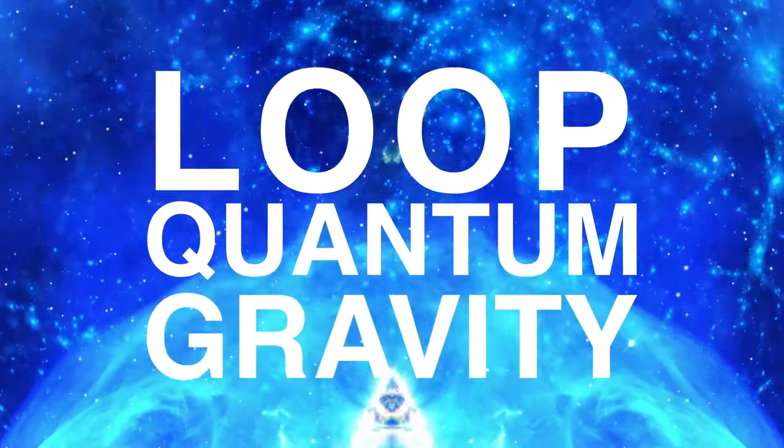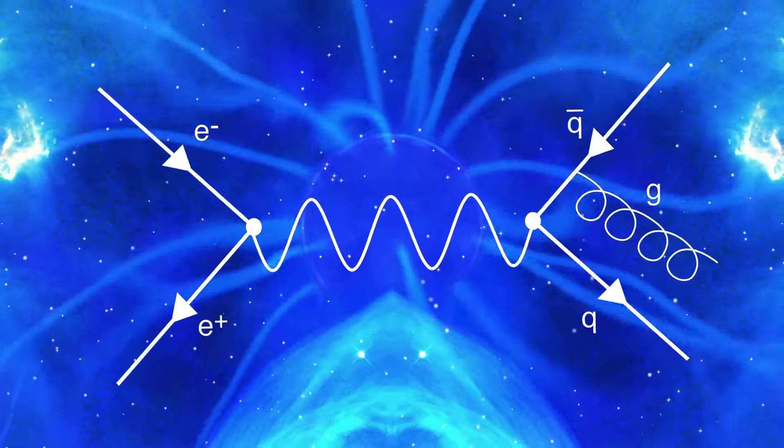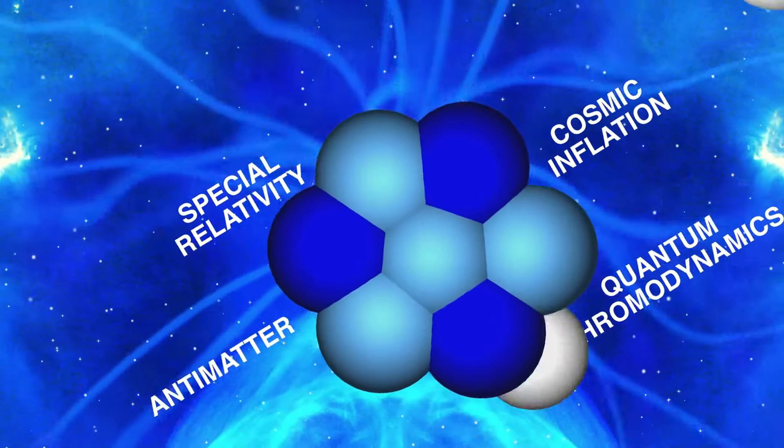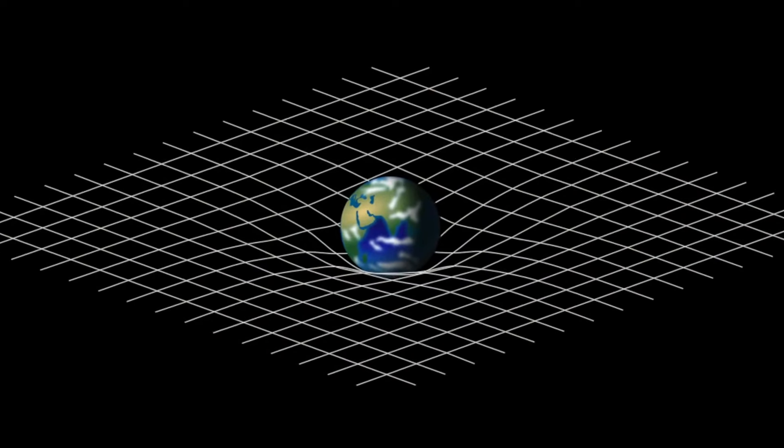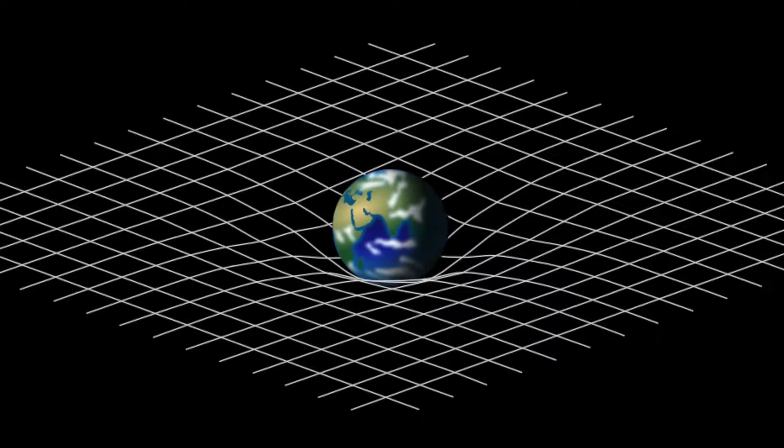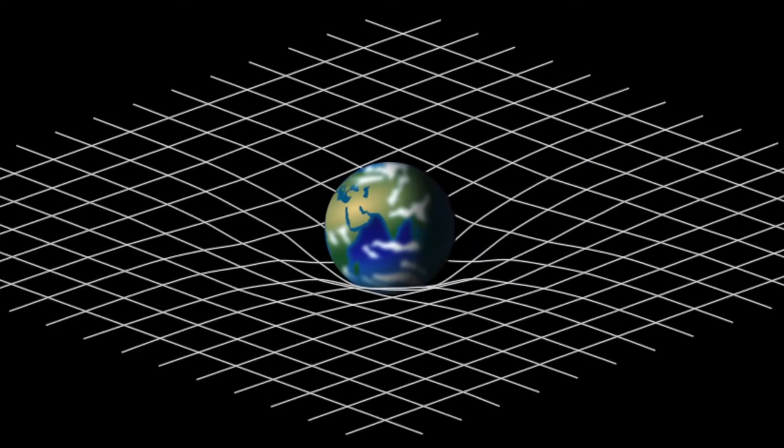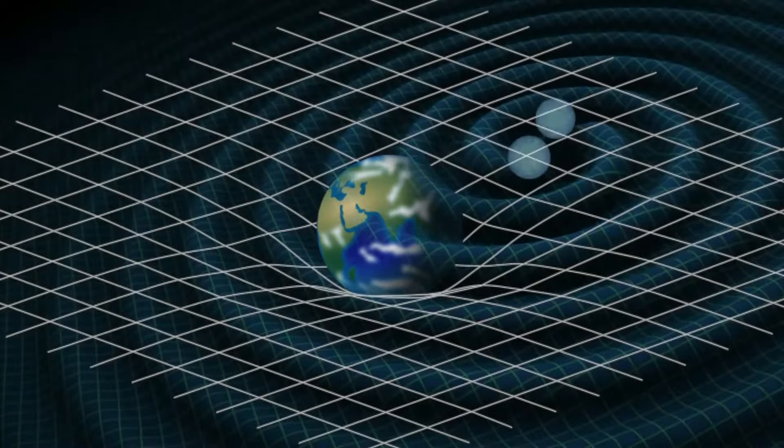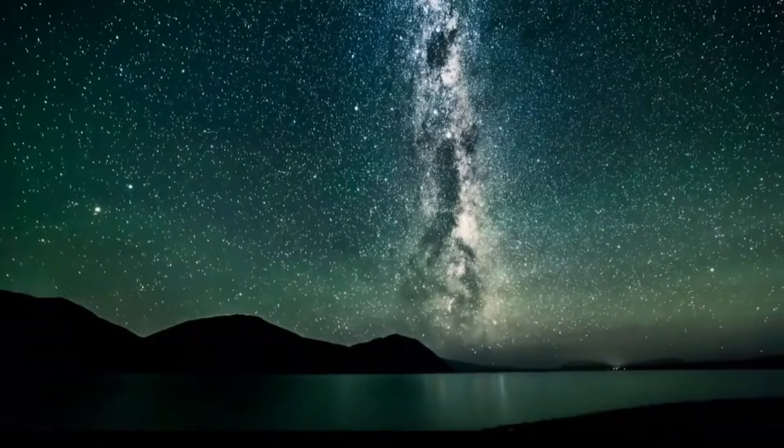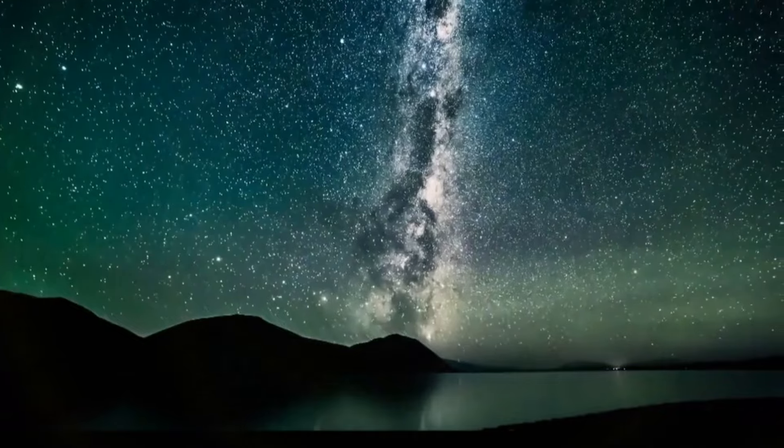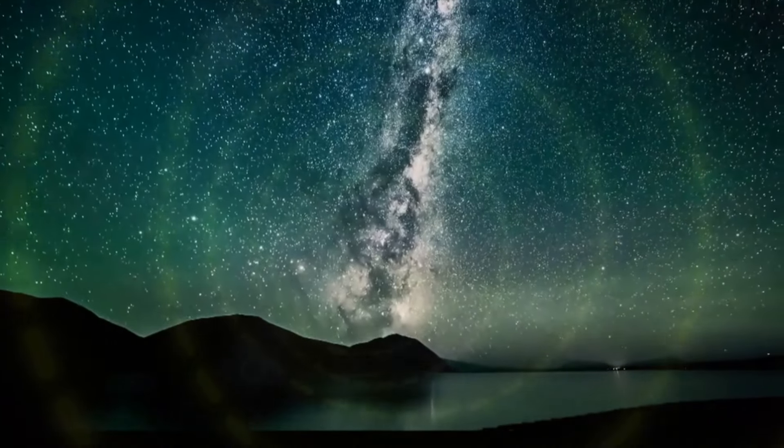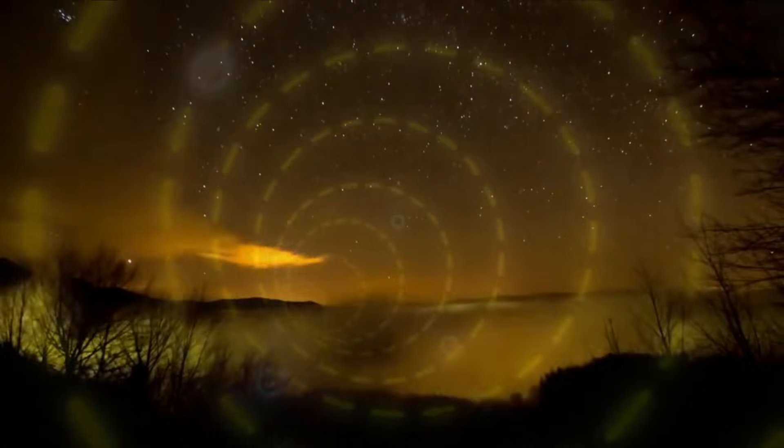Loop quantum gravity, or LQG, serves as a theoretical framework aiming to harmonize quantum mechanics and general relativity, the two prominent realms of 20th century physics encompassing the very small and the very large, respectively. Loop quantum gravity suggests that space is not continuous but is composed of tiny, discrete loops, minuscule, indivisible loops, akin to threads woven into a piece of fabric.